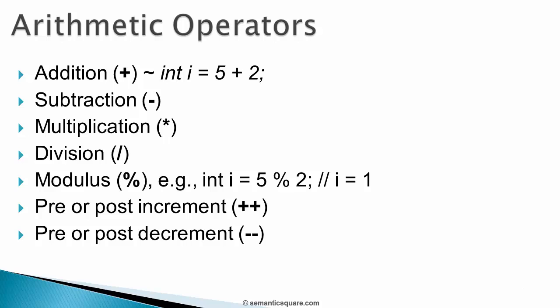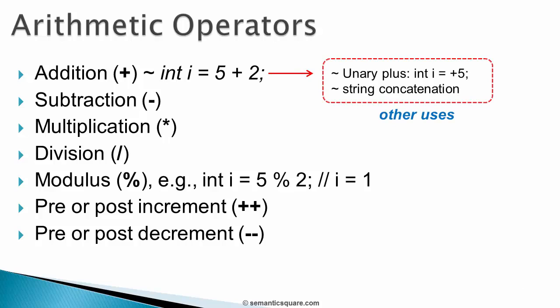First is the addition operator for which a plus symbol is used. The example shows addition of two literals and assigning the resulting sum to the variable i. There are also a couple of other ways in which a plus operator can be used. One uses a unary plus which is used to just indicate that a number is positive. Second, it can also be used in concatenating or joining multiple strings, which we will see later while discussing strings.